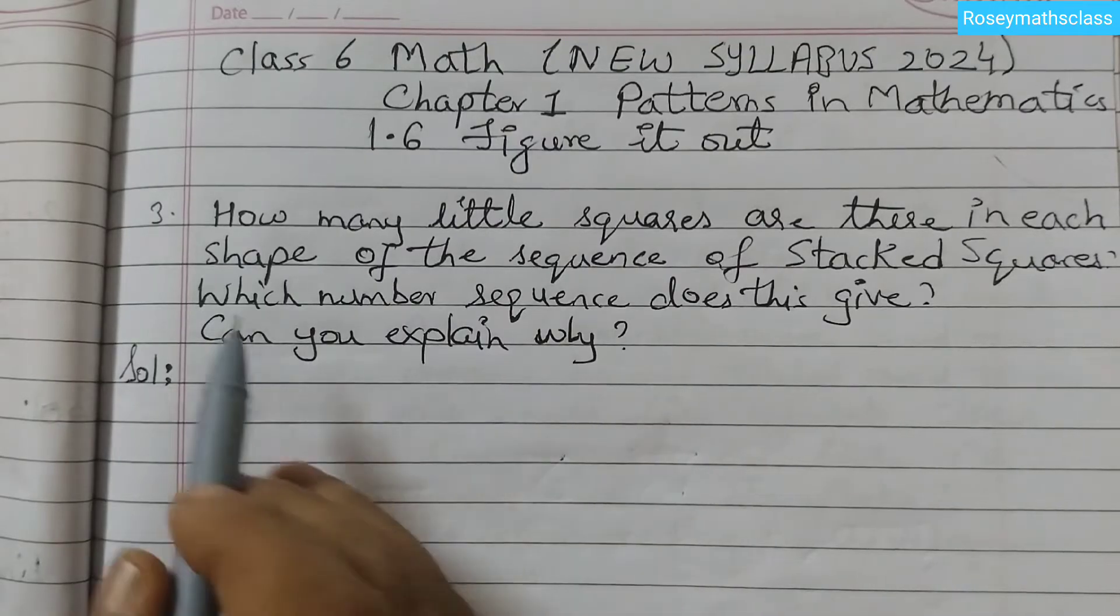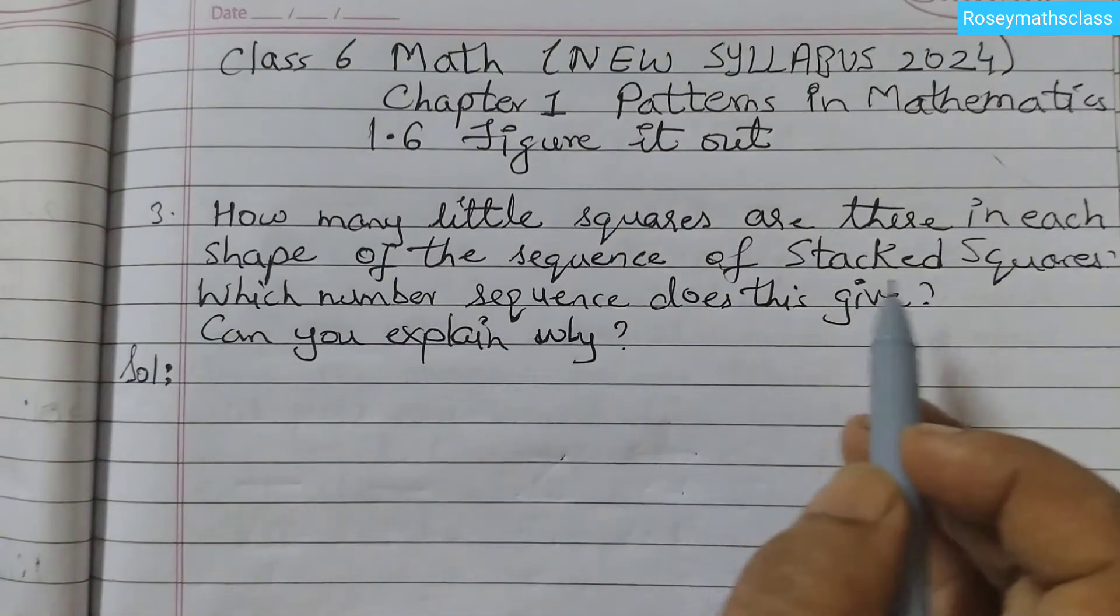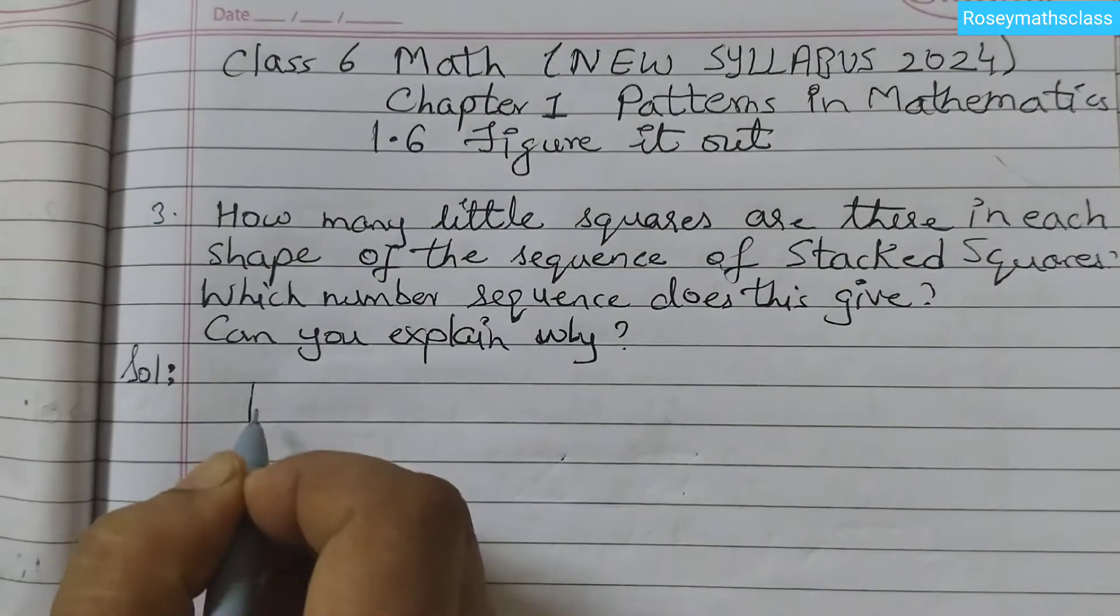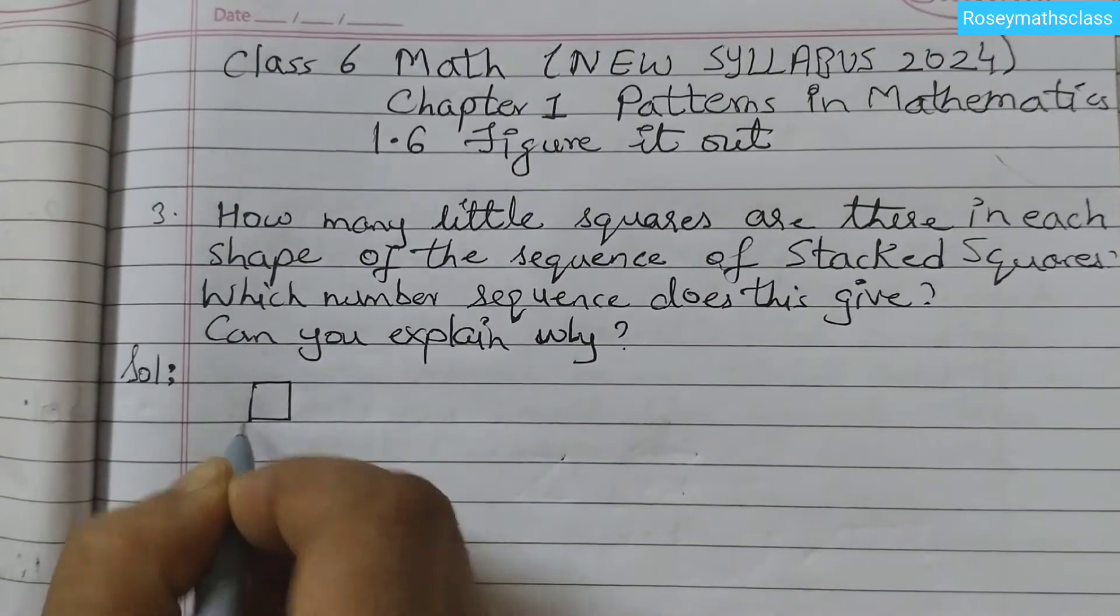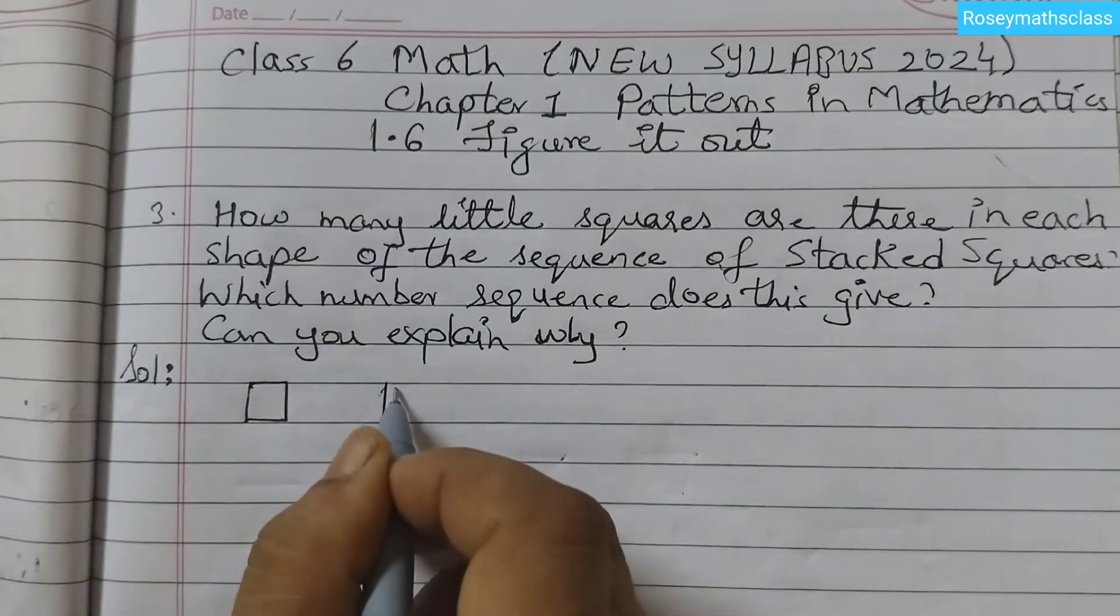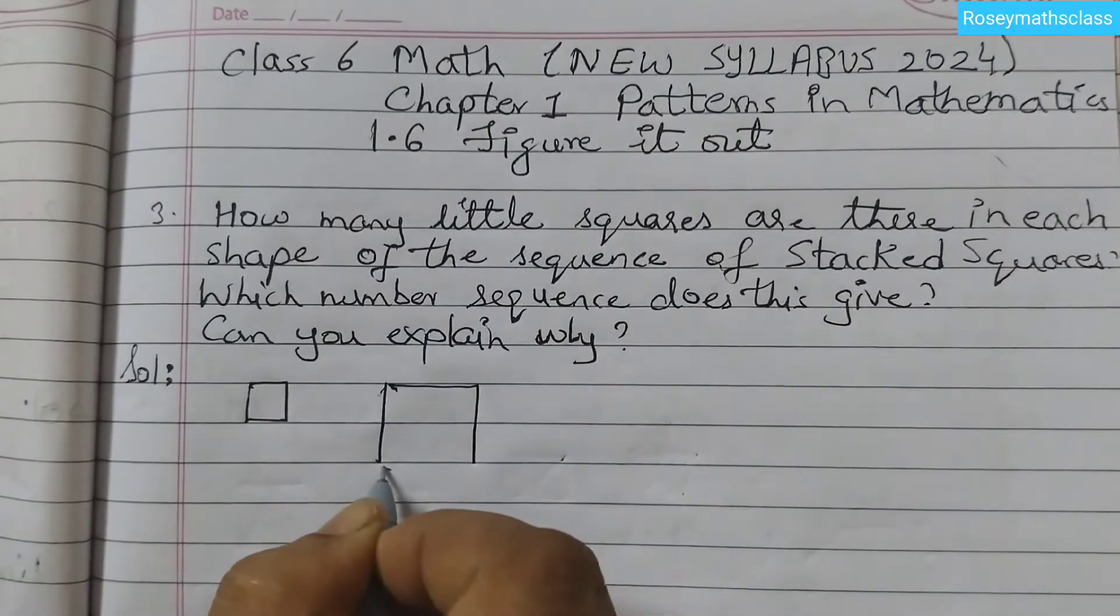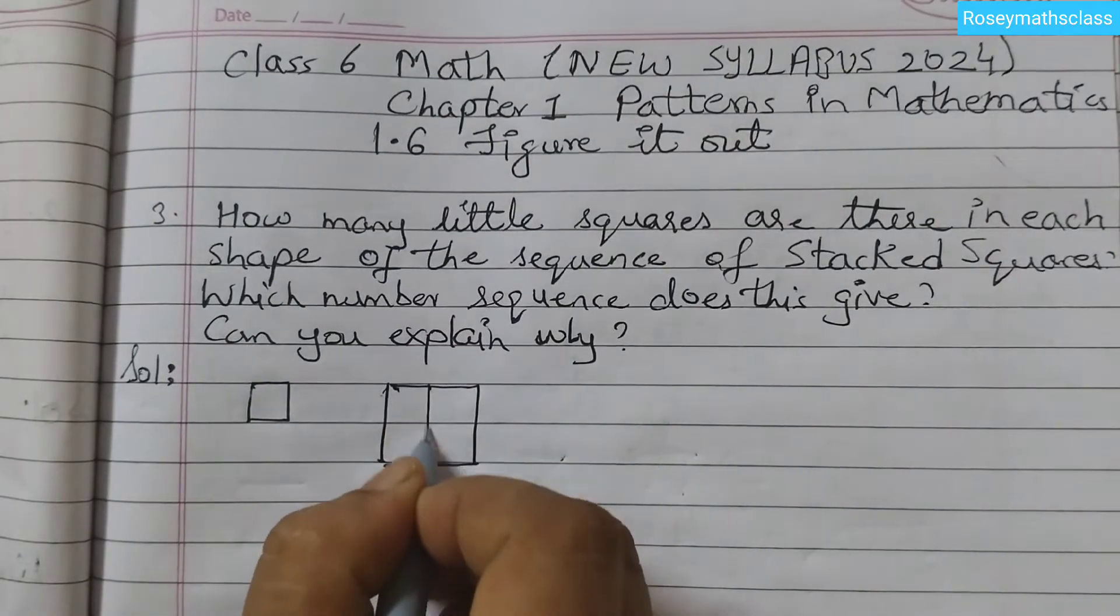So first we must know the shape of the sequence of stacked squares. First shape is just one square. Then we have four squares like this.